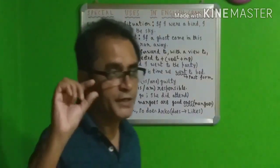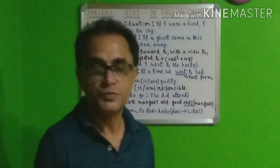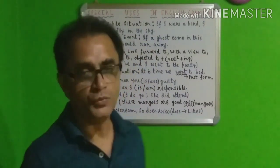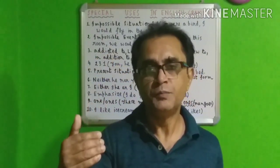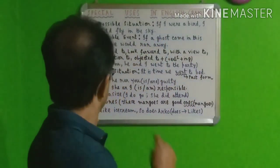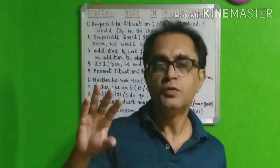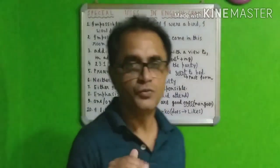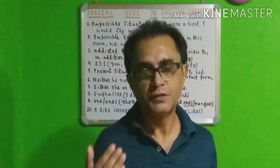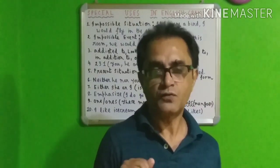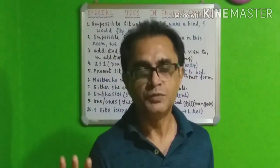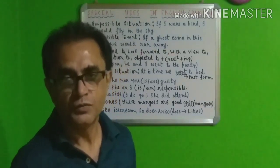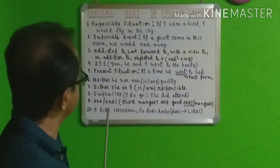After these special phrases, you have to use the '-ing' form of the verb. For example: 'He is addicted to smoking.' 'I look forward to meeting you.' 'With a view to maintaining her family.' 'In addition to writing poems, he writes stories also.' 'Objected to' means to oppose — 'My father objects to my going there.' 'Her father objects to her marrying that person.' After 'to' in these phrases, '-ing' is used — that is also a special use.